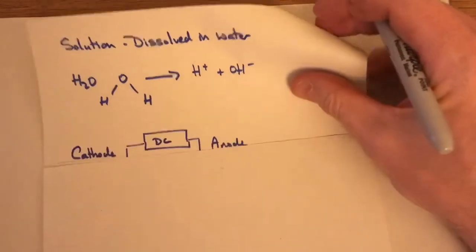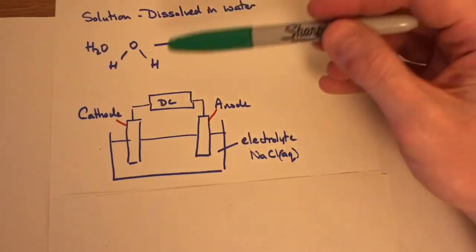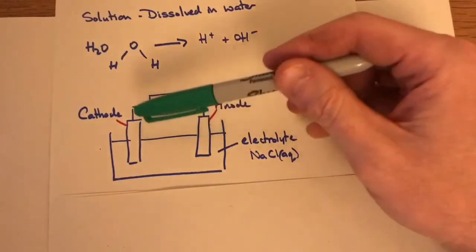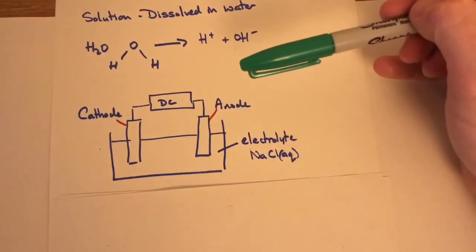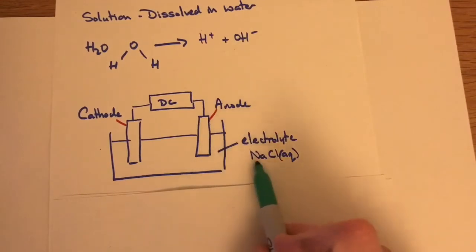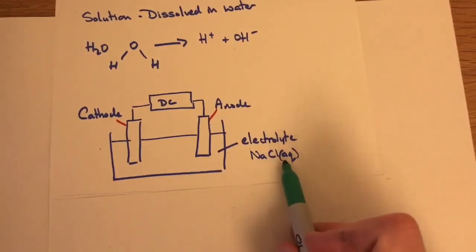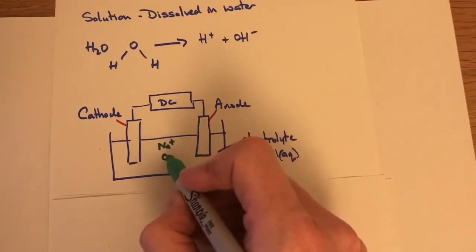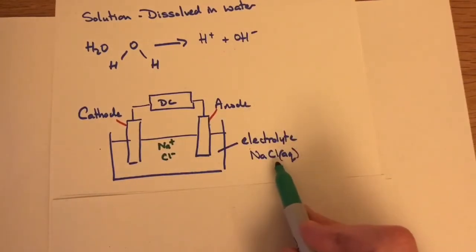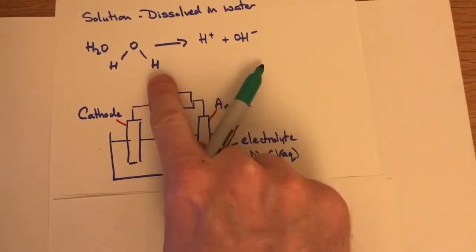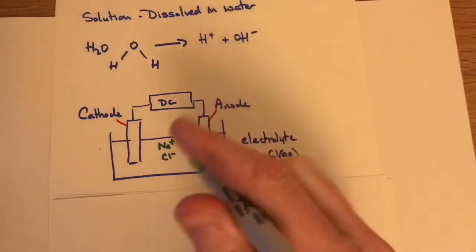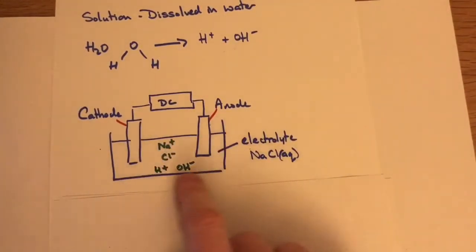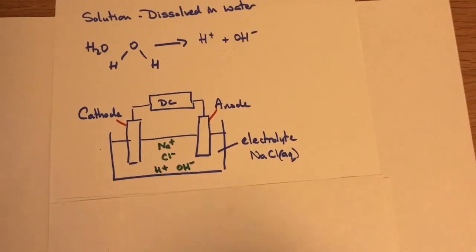A reminder of the electrolysis setup: we have a DC electrical supply and two graphite electrodes — one is the cathode and one is the anode. If our electrolyte is aqueous sodium chloride, we will have sodium ions and chloride ions from the ionic compound, plus H⁺ ions and OH⁻ ions from the water. So inside the electrolyte we've got four lots of ions moving around.